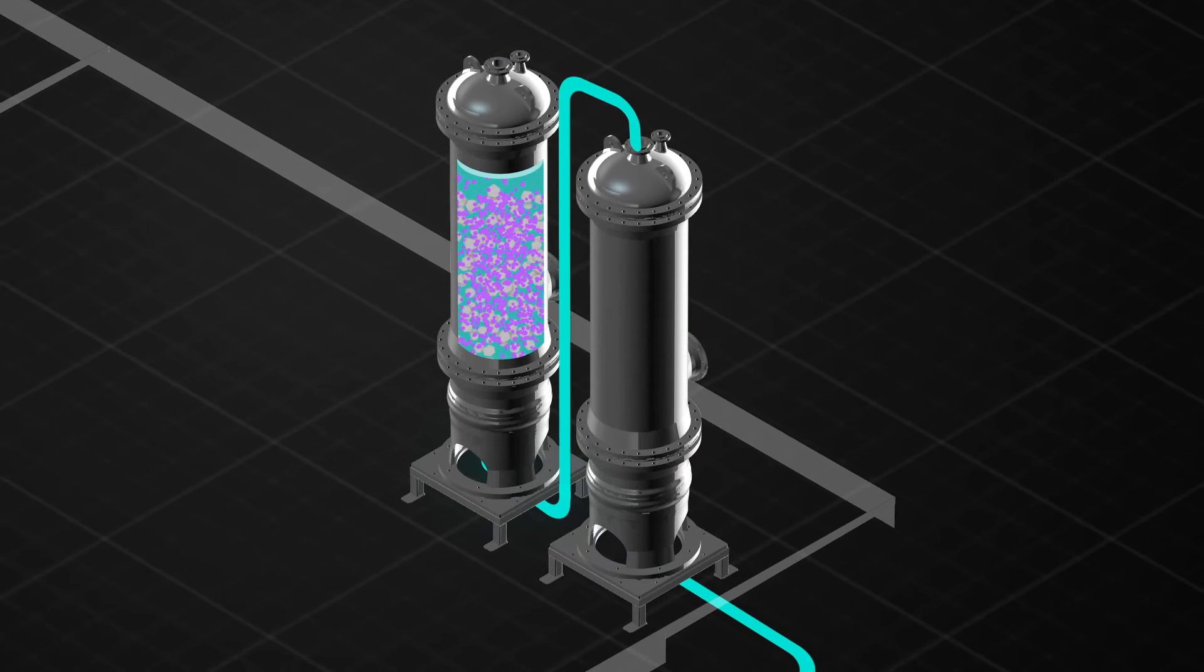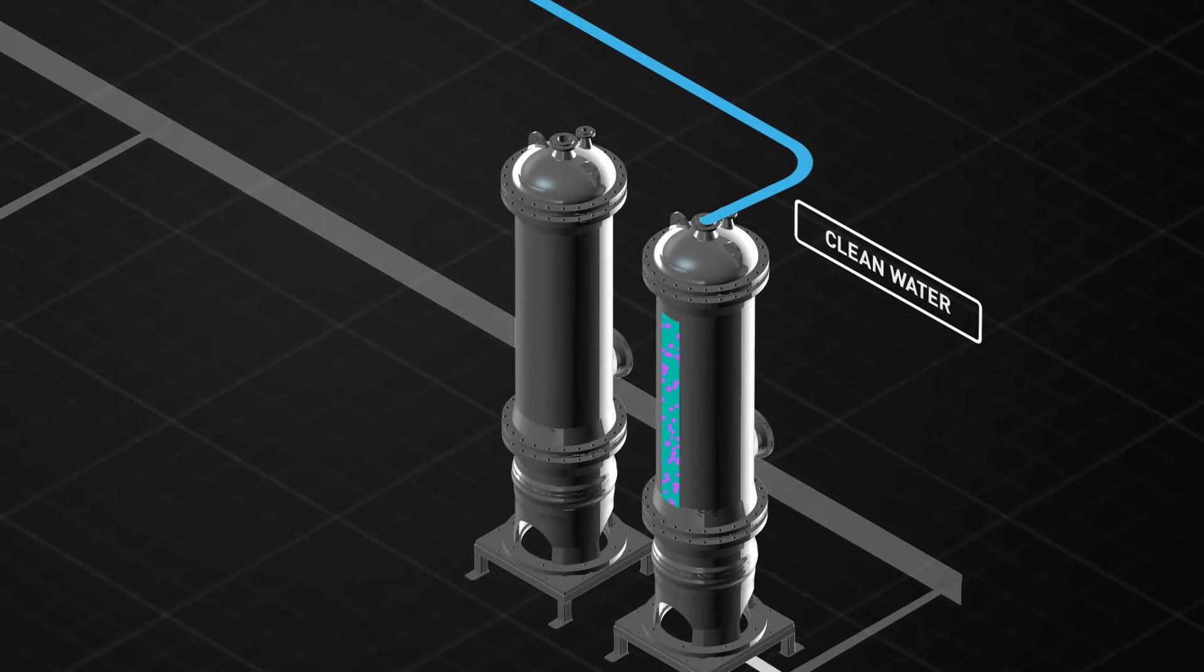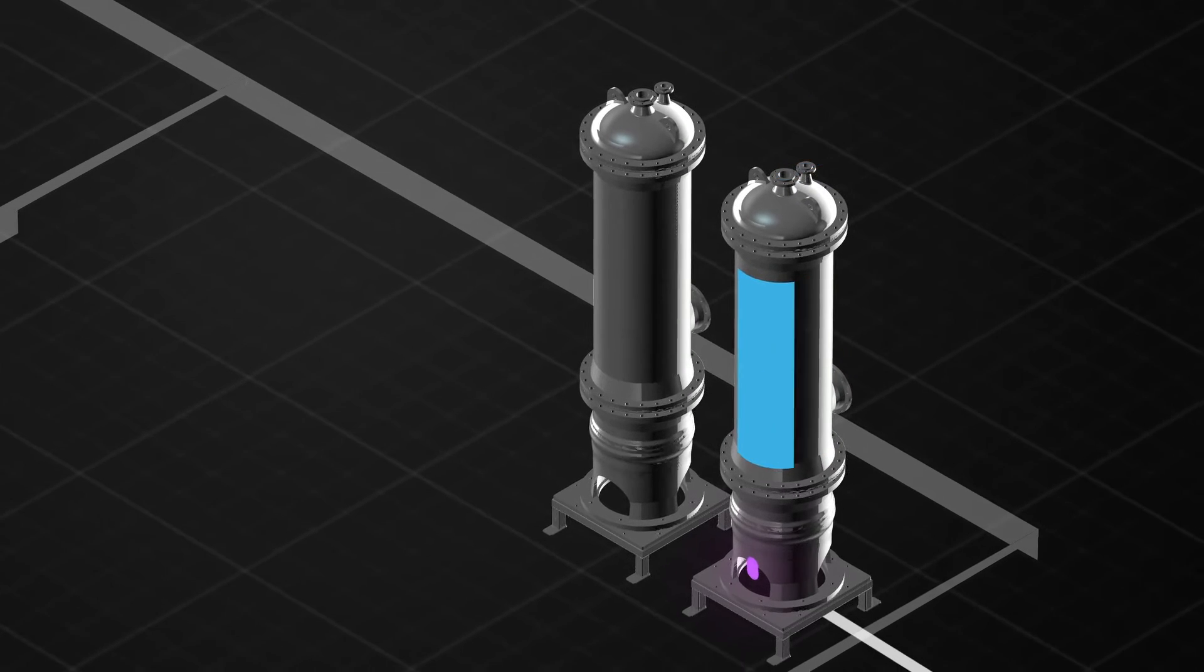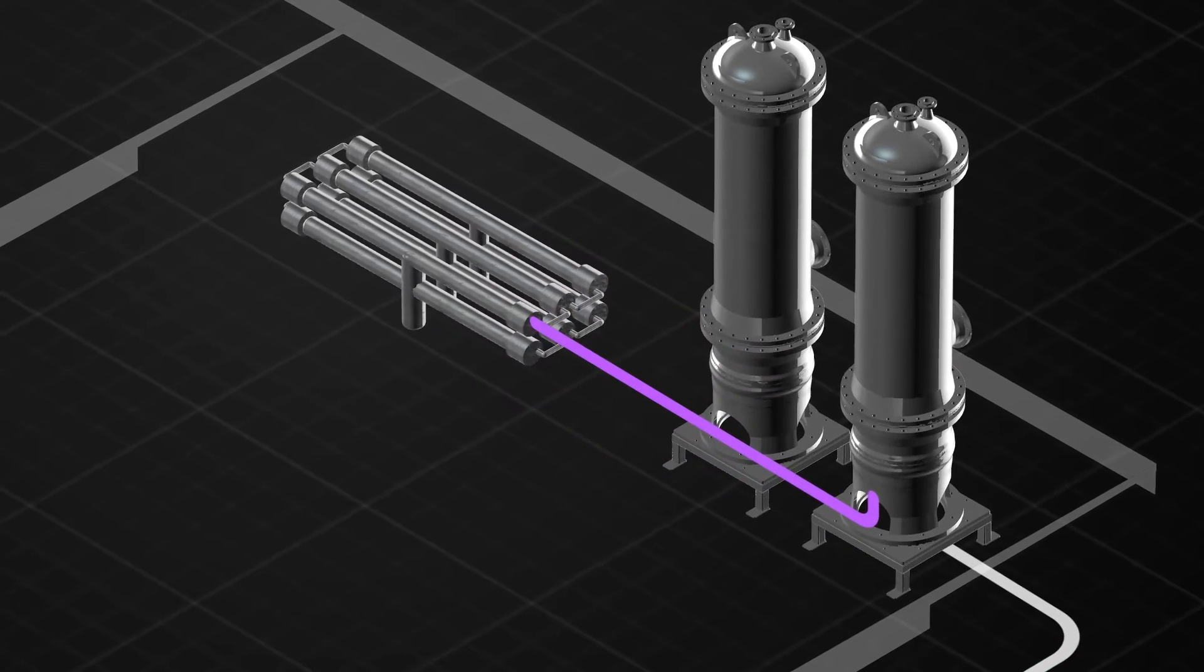Once the resin is fully loaded with lithium, the brine flow stops and clean water is added to the column to remove the lithium and produce a stream high in lithium but much lower in impurity elements. This process recovers greater than 90% of the lithium, based on trials to date.